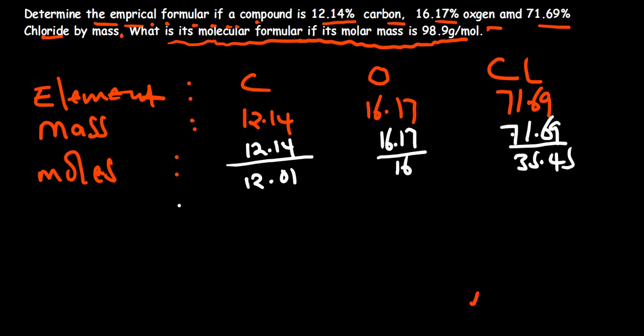From this we are going to get our moles. Let's divide on the calculator. When I divide 12.14 by 12.01, I'm getting 1.0108. When I divide 16.17 by 16, I'm getting 1.0106. Then when I divide 71.69 by 35.45, I'm getting 2.02.